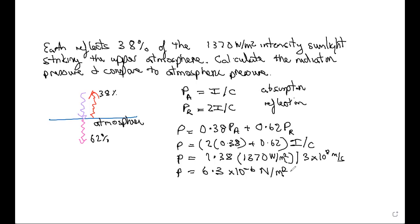As a reference, compare this to atmospheric pressure — about 1 times 10 to the 5 newtons per square meter at sea level. Sunlight is obviously important — it keeps us warm, grows our food, and so on — but the radiation pressure from sunlight is much, much smaller than the atmospheric pressure of the Earth's atmosphere.